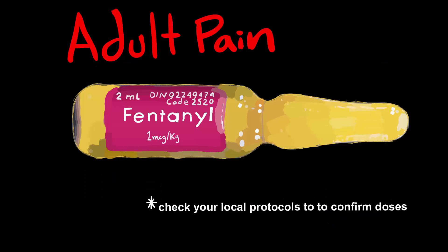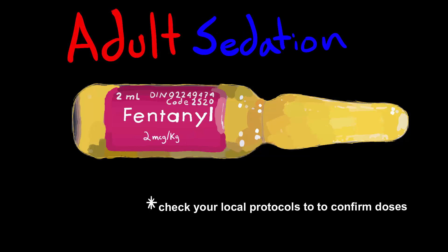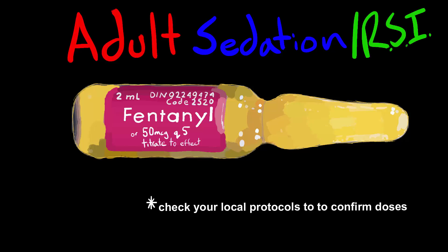For adult analgesic pain relief, the dose is around 1 mcg per kilogram, or give 50 mcg aliquots Q5 and titrate to effect. For adult sedation, larger doses of up to 2 mcg per kilogram are seen, although some practitioners still prefer giving doses of 50 mcg until they achieve the sedation level they need — whether for procedural sedation prior to manipulation of a dislocated joint or before rapid sequence intubation.